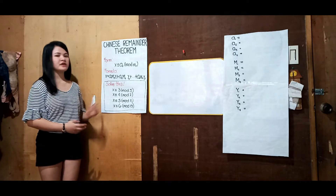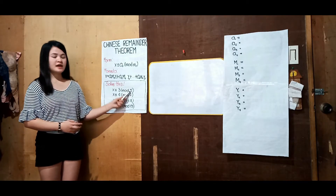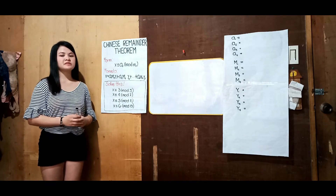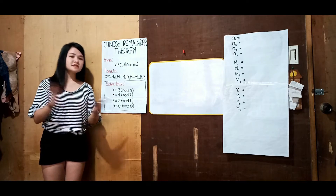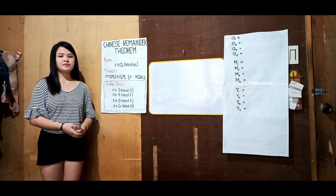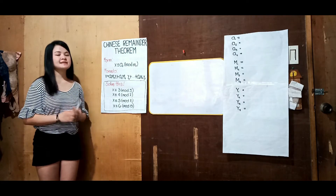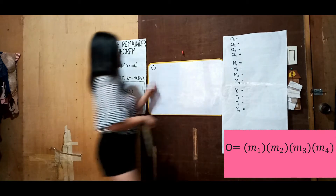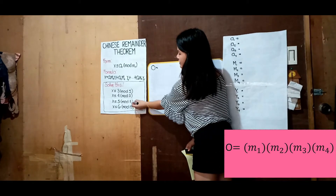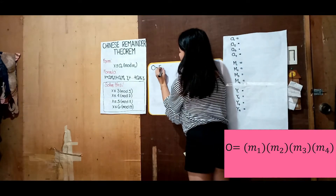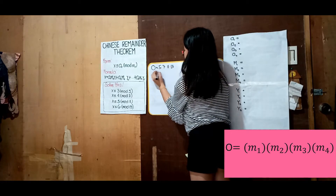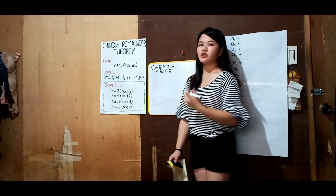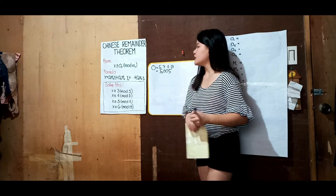We have four equations to solve. Since 5, 7, 11, and 13 are pairwise relatively prime, the Chinese Remainder Theorem tells us that there is a unique solution modulo O. We are free to set this unique solution modulo as capital O, and O is solved by multiplying the m's — that is 5 × 7 × 11 × 13 — which equals 5005. We solve O because we will use it in the latter solutions.